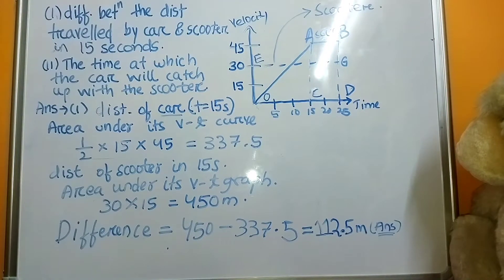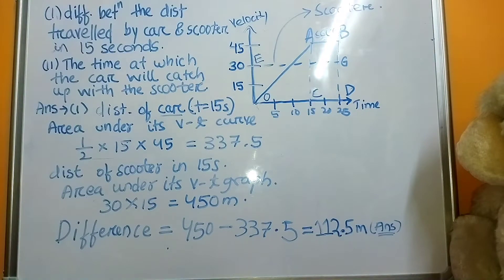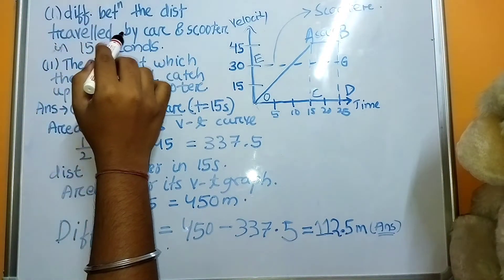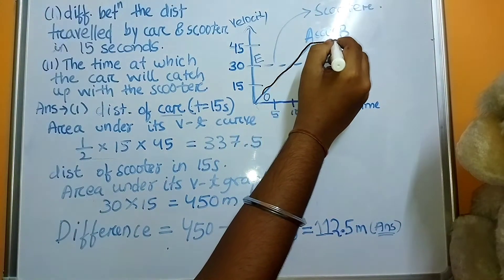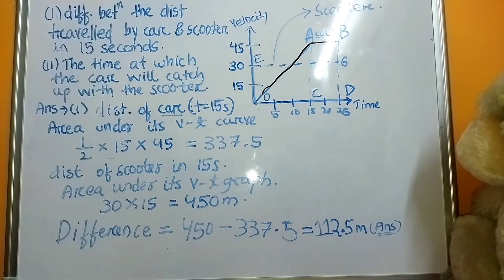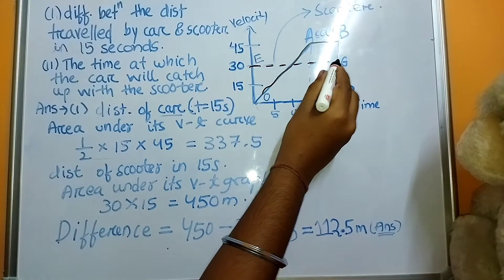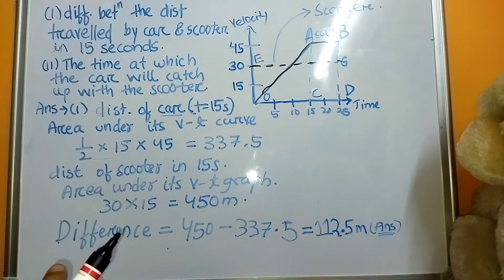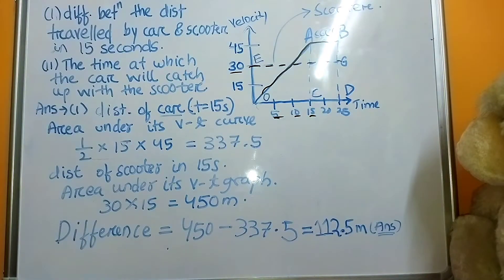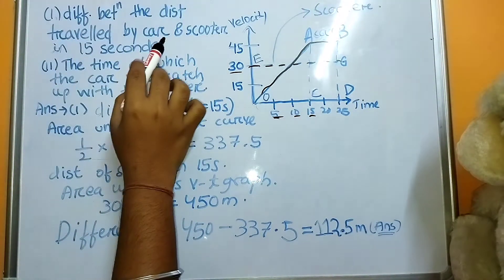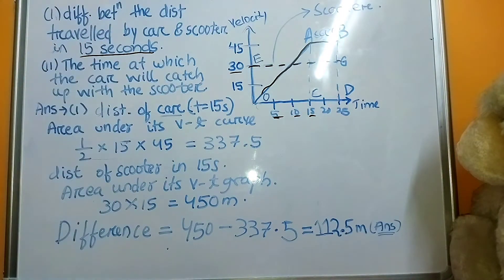This is the VT graph given to us. By observing this VT graph we have to find two bits of the question. First is the difference between the distance travelled by the car and scooter. This motion represents the motion travelled by car, and this dotted line represents the motion of scooter. We need to find the difference between the distance travelled by car and scooter in 15 seconds.